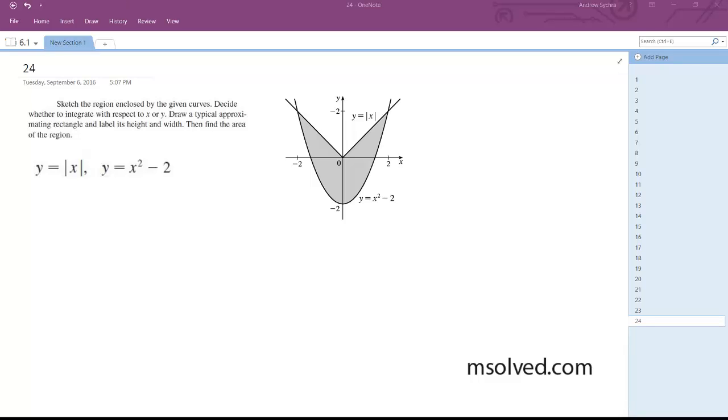Alright, so what we're going to do is find the area enclosed. I've already got the diagram here, so our intersection points in this case are going to be negative 2 and 2.